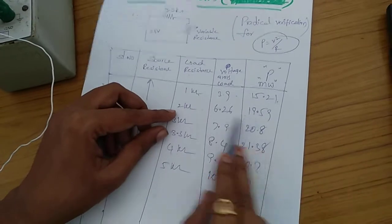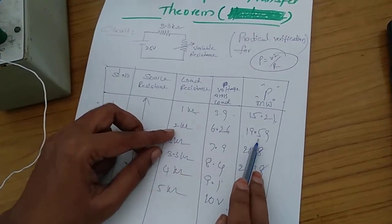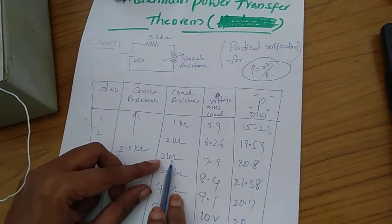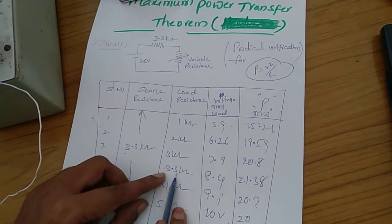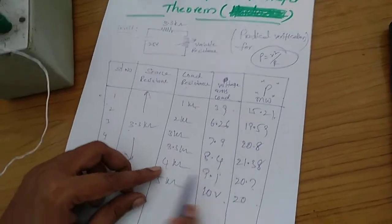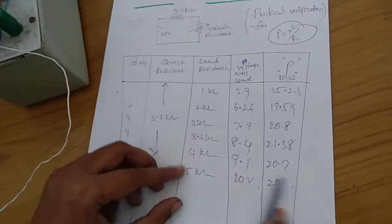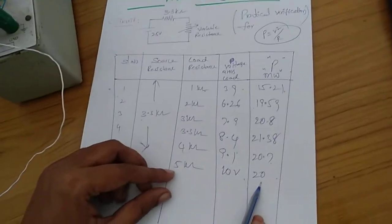15.21 for 1 kilo ohm. For load resistance of 2 kilo ohms, the load power is 19.5. For 3 kilo ohms, it is 20.8. For 3.3 kilo ohms, it is 21.3. For 4 kilo ohms, it is 20.7. And for 5 kilo ohms, it is 20.